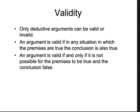Another way to put this: an argument is valid if and only if it is not possible for the premises to be true and the conclusion false. I ask myself: is it possible for the premises to be true and the conclusion false? If that possibility exists, it's not a valid argument. Validity is specifically about that support relationship between premises and conclusion.